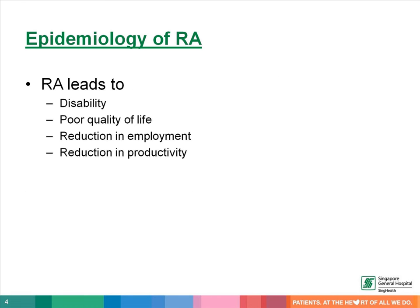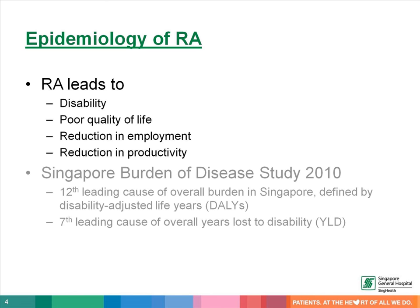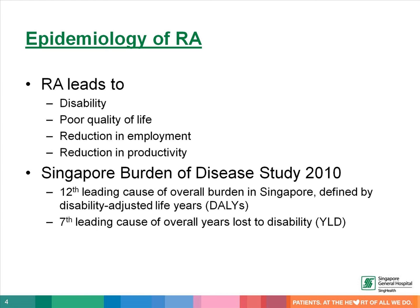Rheumatoid arthritis leads to disability. It is also associated with poor quality of life, reduction in employment, and reduced productivity. According to the data from Singapore Burden of Disease Study 2010, rheumatoid arthritis is the 12th leading cause of overall burden in Singapore, defined by disability-adjusted life years. It is the 7th leading cause of overall years lost to disability.